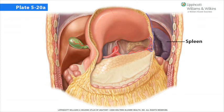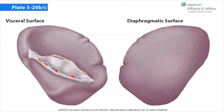The spleen occupies the left hypochondriac region in relation posterolaterally with ribs 9, 10, and 11, and does not normally extend inferior to the costal margin. Despite being protected by the rib cage, the spleen, with its thin capsule and soft pulpy interior, may be ruptured due to an increase in intra-abdominal pressure from a blow to the abdomen. The spleen has a convex diaphragmatic surface and a flat visceral surface in contact with the left kidney, the stomach, and the splenic flexure of the colon. In the center of the visceral surface is the hilum, where blood vessels and lymphatics enter and exit the spleen.